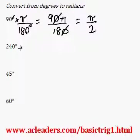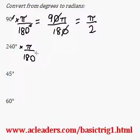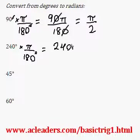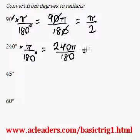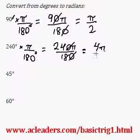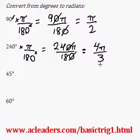Now we multiply 240 by pi over 180. Degrees cancel out, and we get 240 pi over 180. We can divide top and bottom by 6. 24 divided by 6 is 4, and 18 divided by 6 is 3, giving us 4 pi over 3. That's the answer.